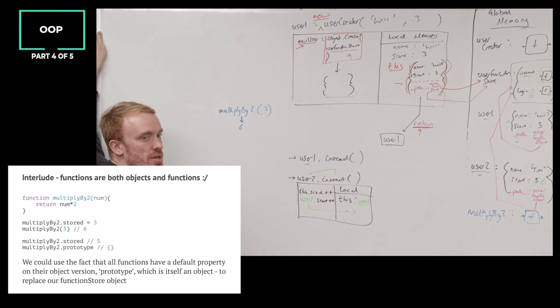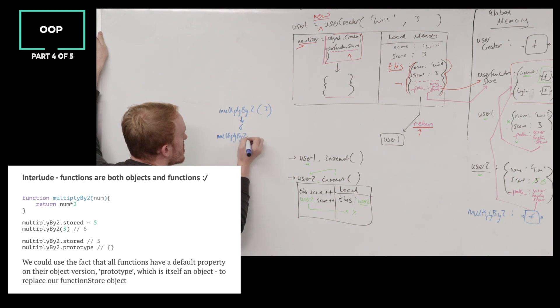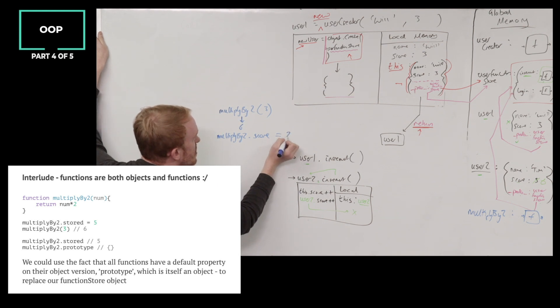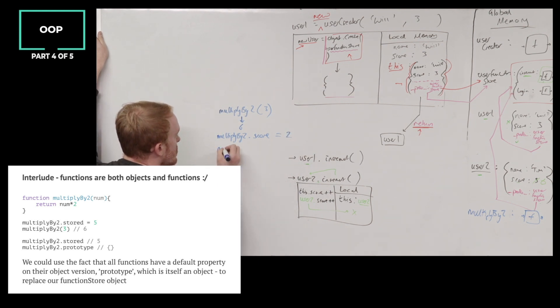You know what I can now do, or I can do at any time, I can also store on it, multiply by 2, a property, I don't know, score, and set that equal to 2.